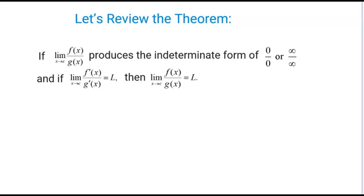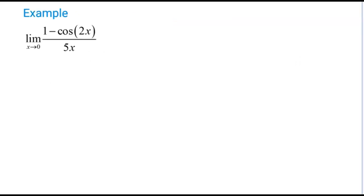This seems a little bit confusing at first, but let's look at a couple of examples and I think it'll make much more sense. Let's say we're looking at the limit as x approaches 0 of 1 minus cos(2x) divided by 5x. It's very important when we're seeing if L'Hôpital's rule works and it does apply, we have to write things out properly.